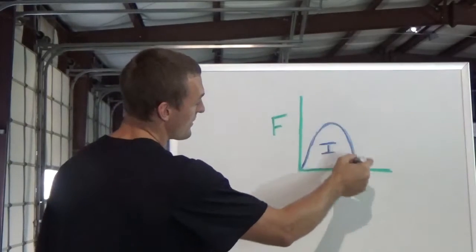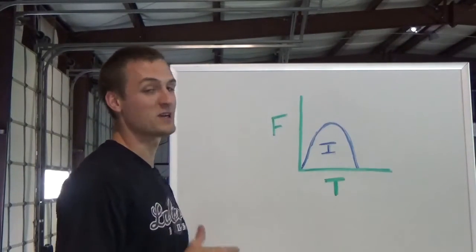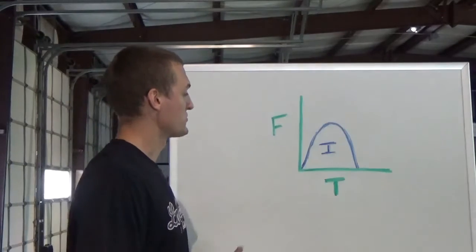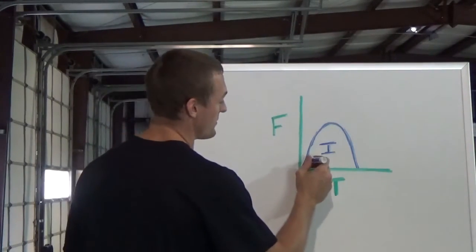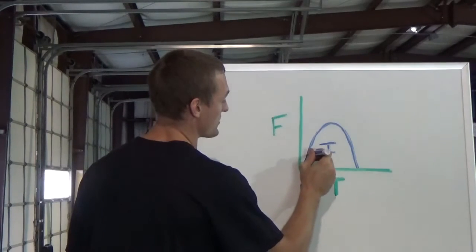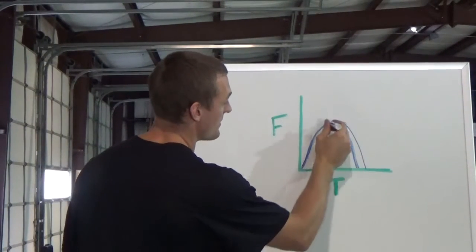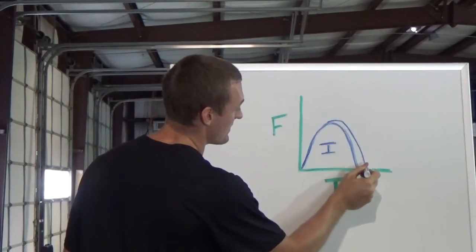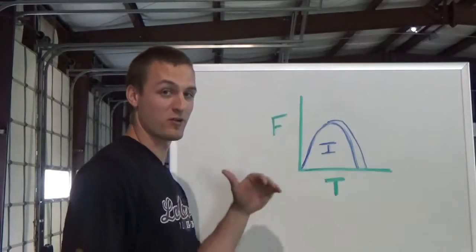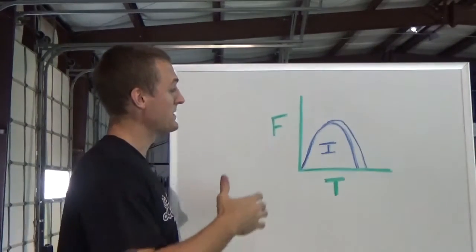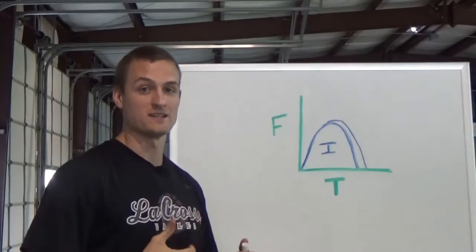Let's say this is me already sprinting as fast as I can. If I want a bigger vertical impulse, assuming this is already full effort, a bigger vertical impulse is going to require more time. So I'm going to have to spend longer time on the ground in order to get that bigger vertical impulse. If I spend longer time on the ground, I'm going to lose stride rate.